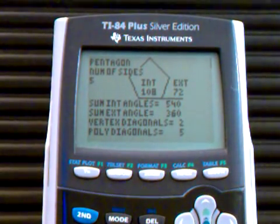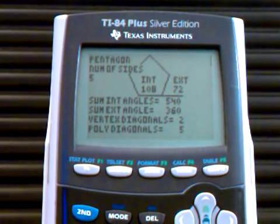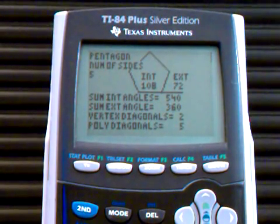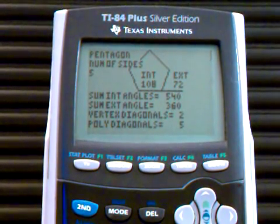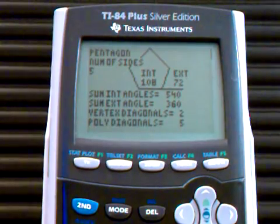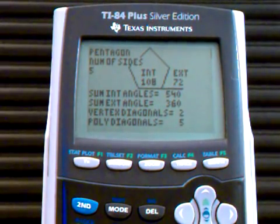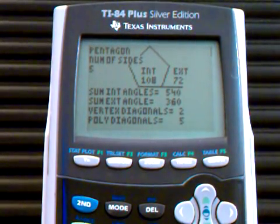One interior angle, gives you exterior angle, then it gives you the sum of the interior angles and sum of the exterior angles, which is always 360 degrees, then the vertex diagonals and the polygon diagonals.